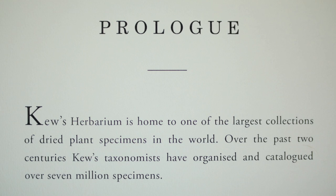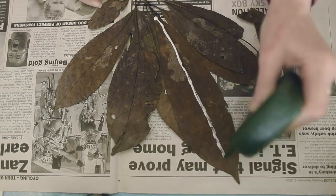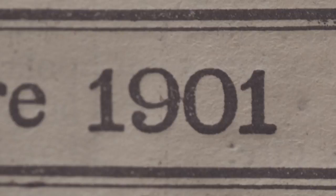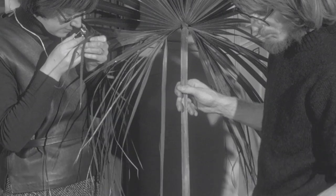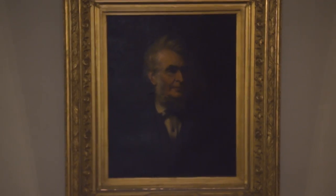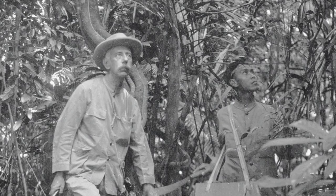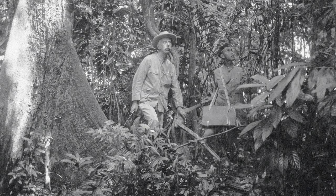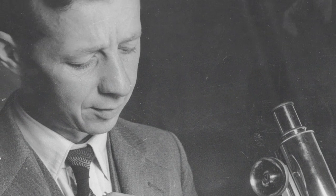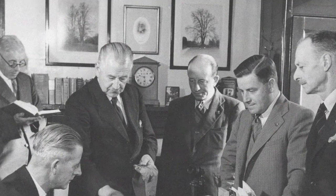Kew's Herbarium is home to one of the largest collections of dried plant specimens in the world. Over the past two centuries, taxonomists have organized and cataloged over 7 million specimens. The original purpose in collecting all this together was figuring out what they could be used for, and if you could cultivate them, where were the best places to cultivate them outside their native range.